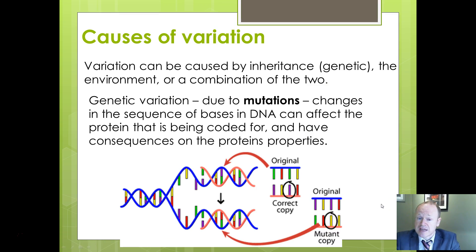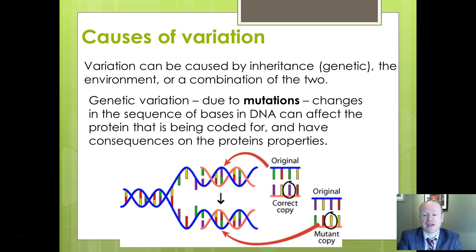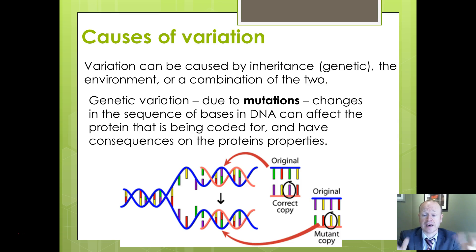Genetic variation can also be due to mutation — a change in the sequence of DNA. It only needs to be one change in one of the base pairs to end up with a completely different amino acid, a completely different protein sequence, stopping it from folding properly and producing a different characteristic.